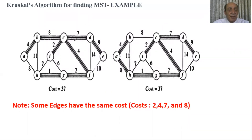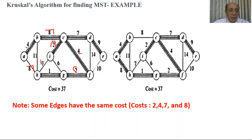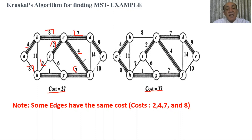Here is another example. In this graph we have repeated weights — for example, weight 4 is repeated, weight 2 is repeated, weight 8 is repeated, and even weight 7 is repeated. In this case we can generate more than one spanning tree. Here is one with cost 37, and another spanning tree with the same cost. It should be easy to obtain the minimum spanning tree in both cases.